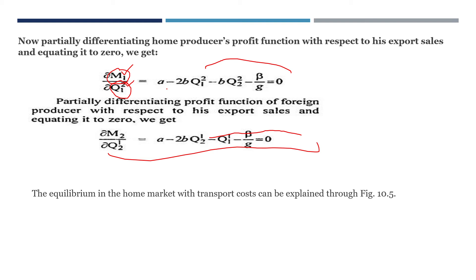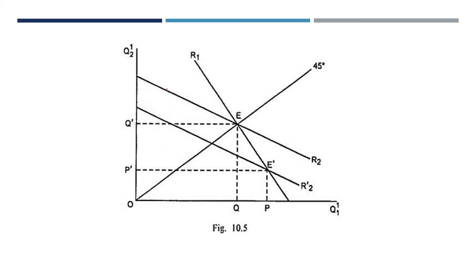We add transportation costs to both the home producer's and foreign producer's profit functions. The equilibrium in the home market with transportation cost is explained through a figure. The reaction curve of the home producer and the reaction curve of the foreign producer are shown.